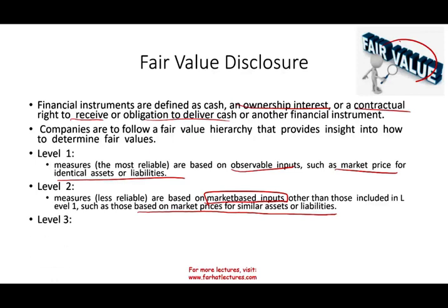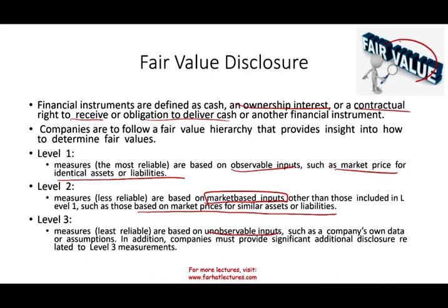Level 3 is the least reliable and requires the most disclosure. It is based on unobservable inputs — the company's own data or assumptions. For example, if a company has an investment with no similar comparable, they must assume cash flows, determine an interest rate, discount those payments, and find the present value. Because the company is determining both the future cash flows and the discount rate themselves, this is unobservable. The company must provide significant additional disclosure for Level 3 — let the users know how this value was computed.